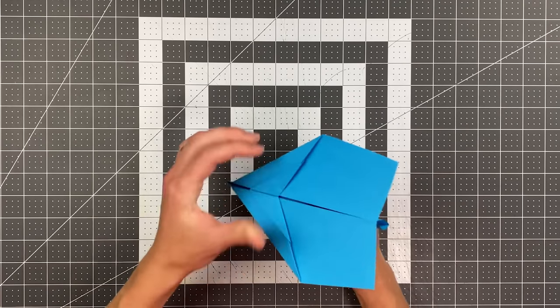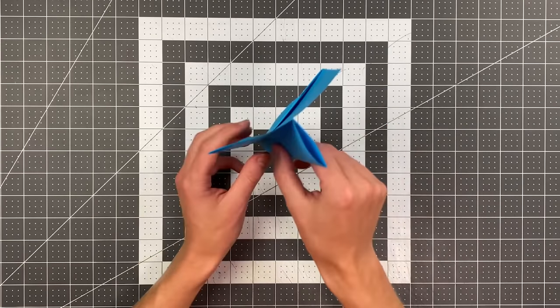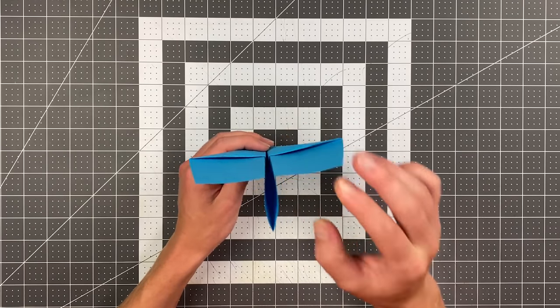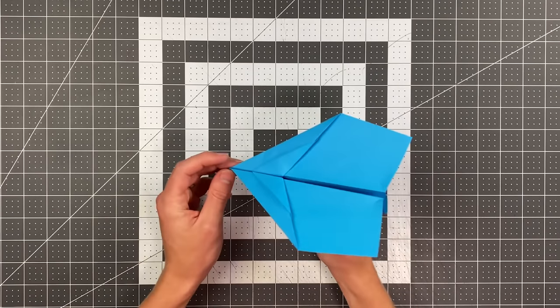Now this should fly very well for you, probably even without any up elevator. But if you find that it's diving down at all you can of course bend the back edges of the wings up just slightly. And with that good luck flying your plane.